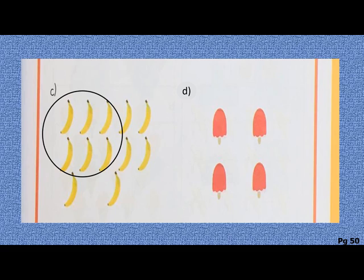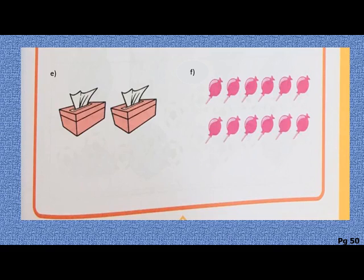Then D part: they have given you four ice creams. You have to loop the group into half, so how many ice creams will come in one group? Two, very good. Now E part: there are two tissue boxes, so can you tell me what will be the half of two? Yes, it will be one, so encircle one tissue box. Then F part: they have given you 12 candies. What will be the half of 12? Yes, six, so encircle six candies.